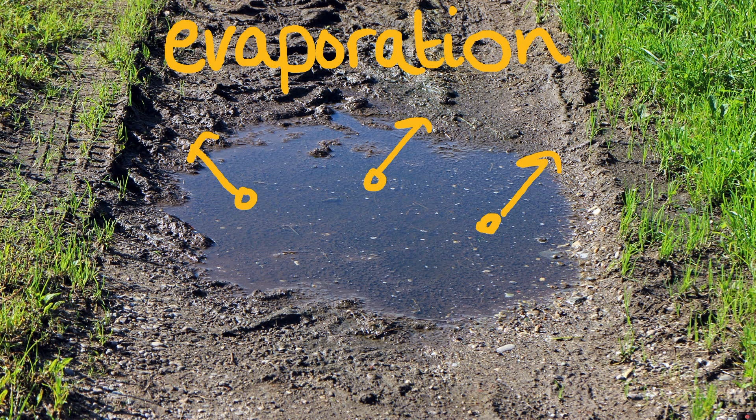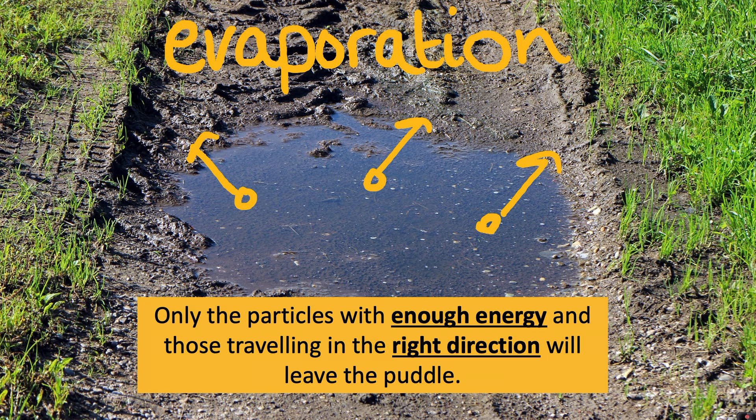With evaporation, we will still be talking about liquid turning into a gas. However, you could quite happily walk through this puddle and not get your feet burned because this evaporation is not happening at the boiling point of water, which is 100 degrees C. With the evaporation of this puddle, only the particles with enough energy and those traveling in the right direction will leave the puddle. So evaporation happens at much lower temperatures and we can't use that word for describing the change of state.